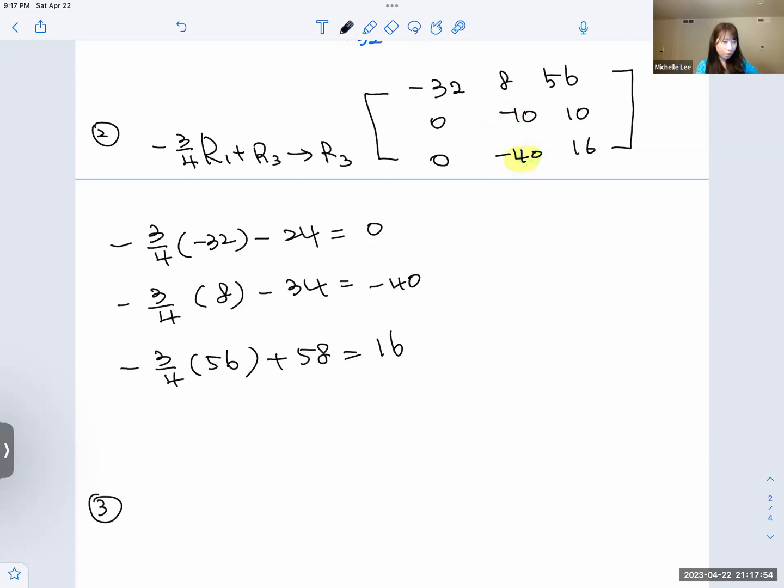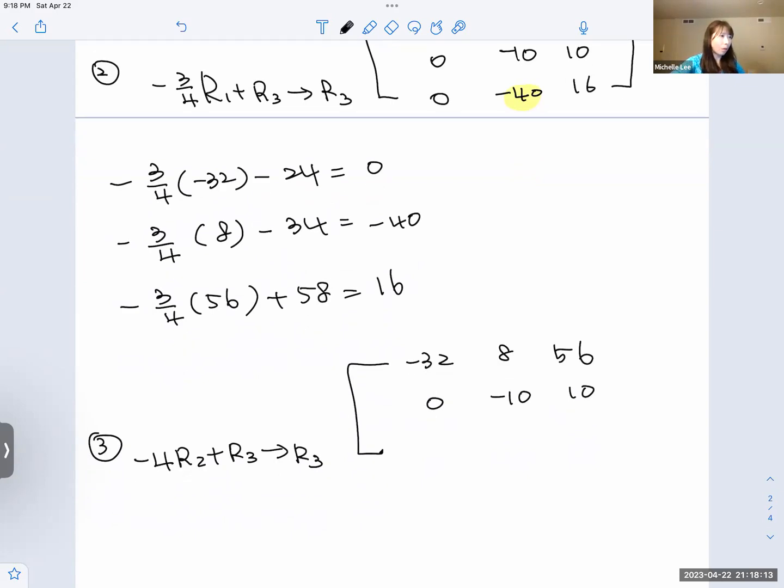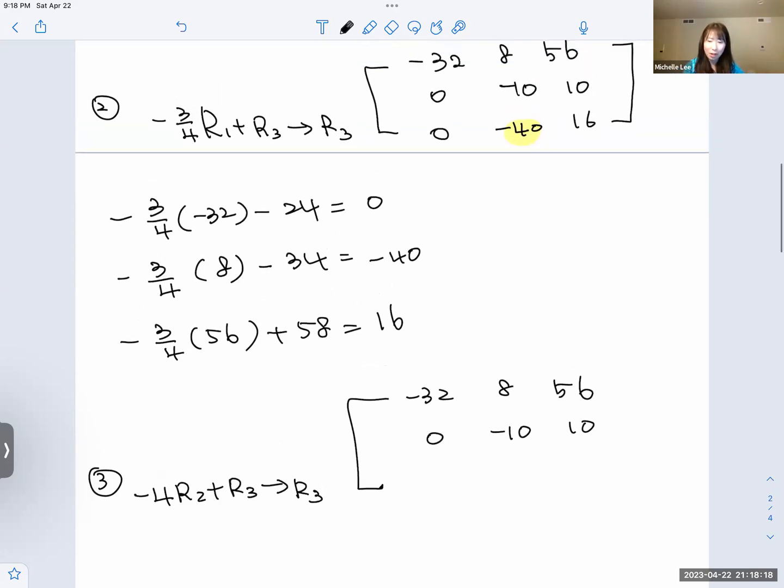So negative 32, 8, 56, 0, negative 10, 10. Let me write down this one for you. Think because it's easy. So we get negative 4 times negative 10, which is positive 40. Add them is 0. And negative 40. And plus 16, which is negative 24.